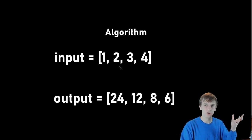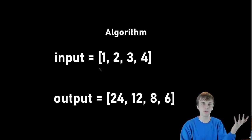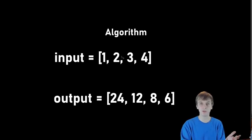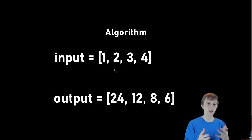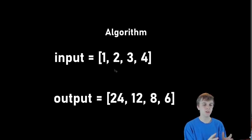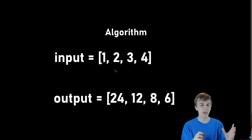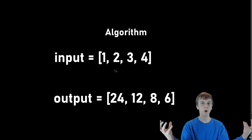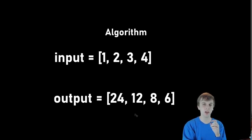You can verify that claim: for two, it's 12 times one, which is 12 — that's what we're getting in the output. You can check that for three, four, and one. One has nothing to the left, so it'd be two times three times four, which is 24. So what we're going to end up doing is a few loops: one loop calculates all of the left products, one loop calculates all of the right products, and then the final loop multiplies the left products and the right products together to get our final output values.